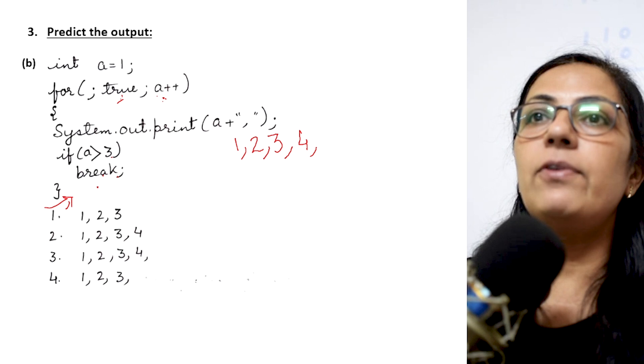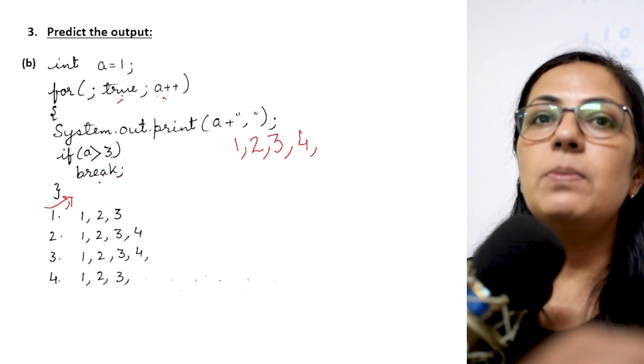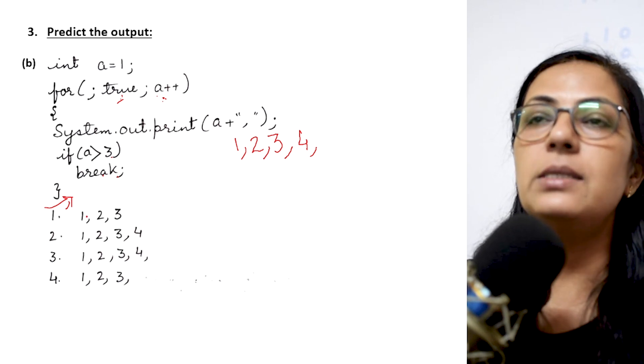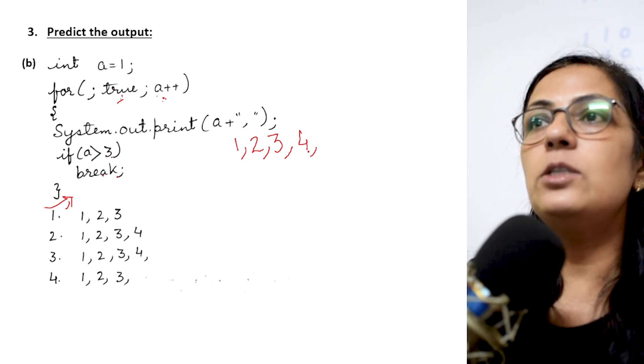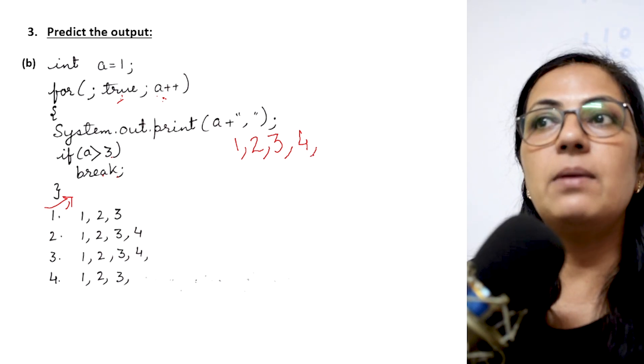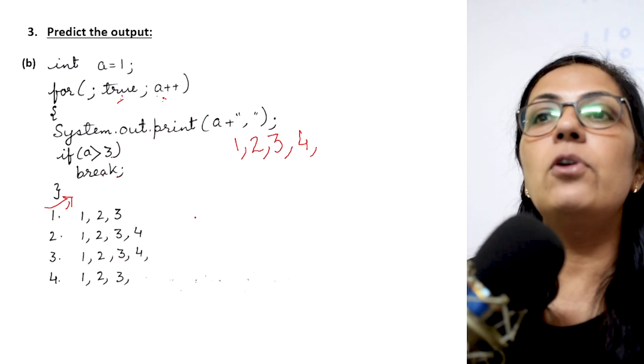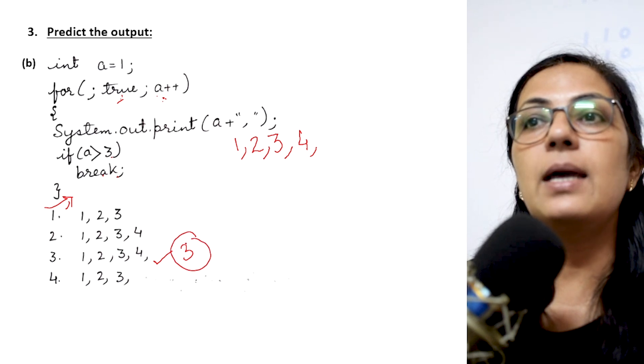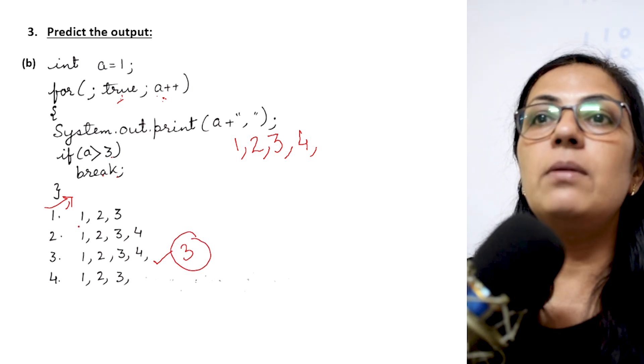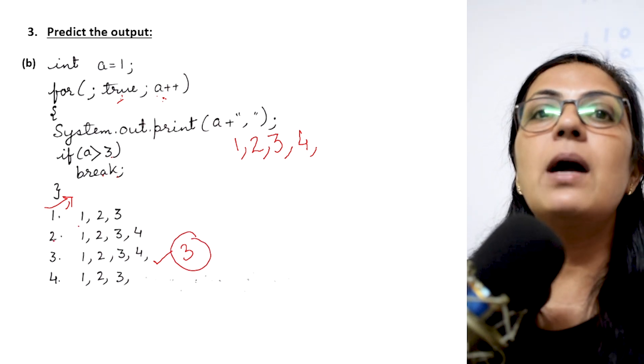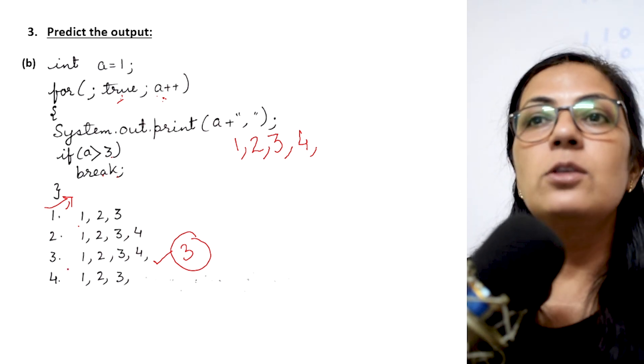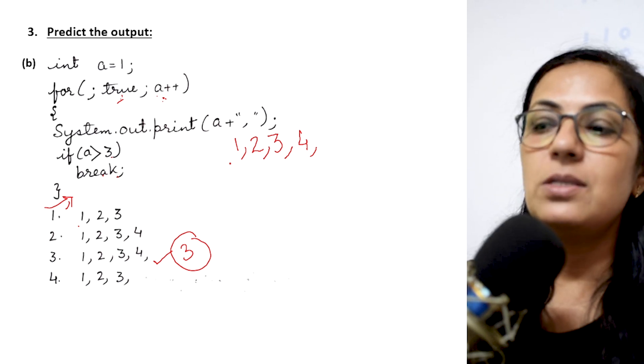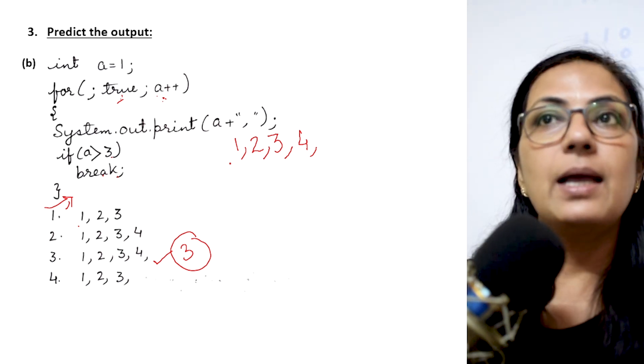So break statement will be executed. It will come out of the for block. Children whenever the break statement is executed it takes you out of the current block. So your option 1, 2, 3, 4 separated by comma and after 4 also a comma is printed. So option 3 is the correct answer. Few children may put a tick mark on option number 2. So children please, my advice again to solve these type of questions yourself before you select the correct option.